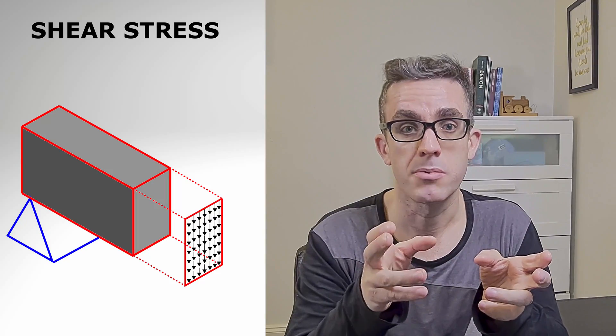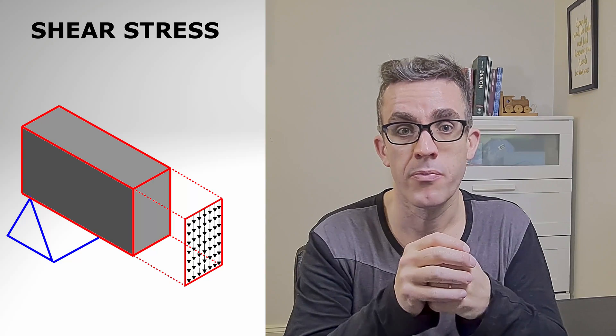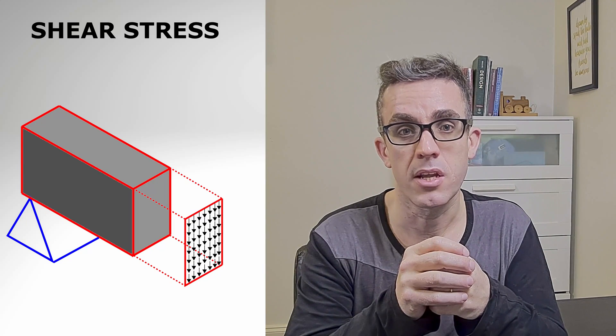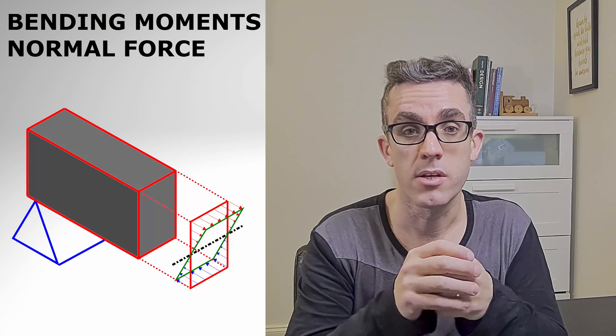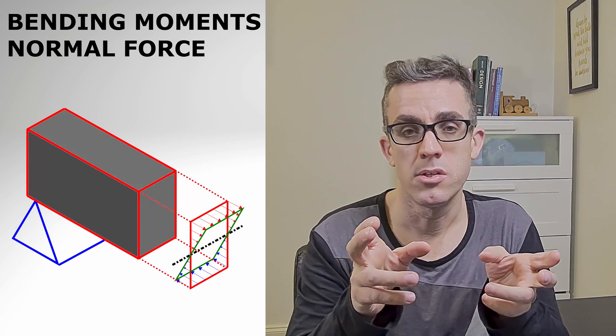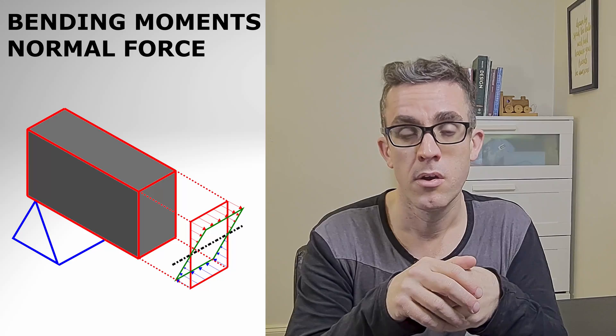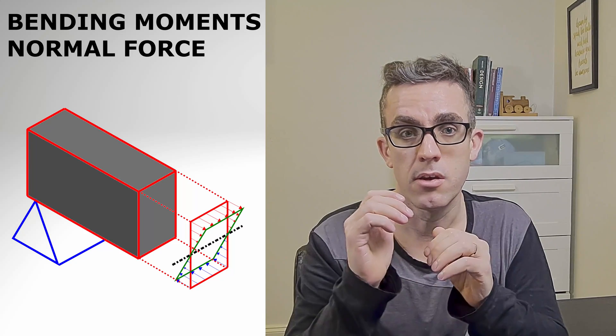Now that we've covered both the supports and the loads on a beam, what do bending moment and shear force diagrams actually represent? They're a graphical representation of the stresses seen along the beam. The shear force diagram is a graphical representation of the shear stress in that beam — a shear stress that's perpendicular to the axis of the beam — whereas a bending moment induces a normal force in the beam, a normal force that changes with the depth of the beam.